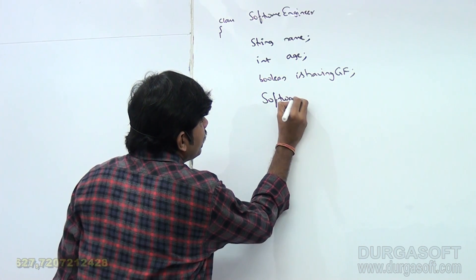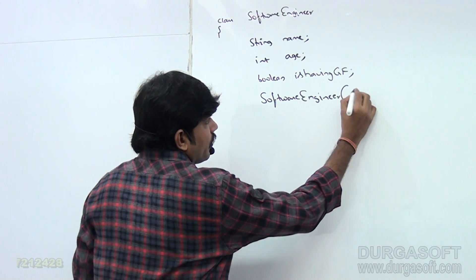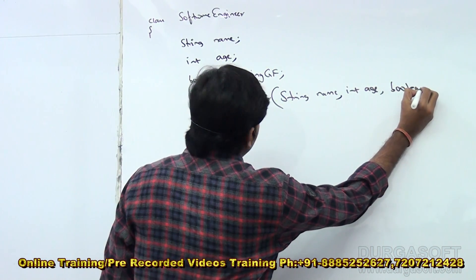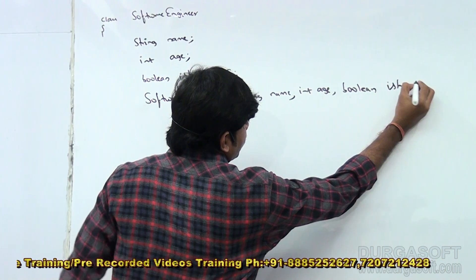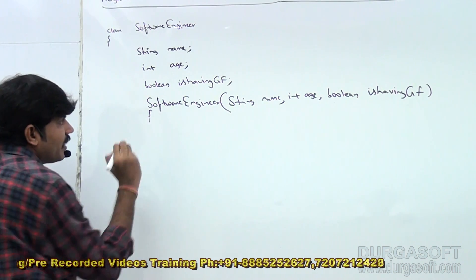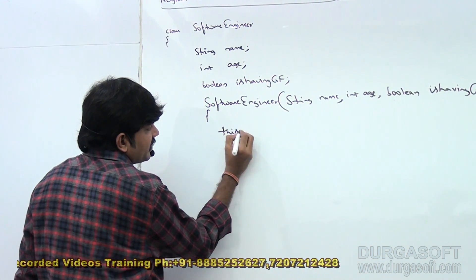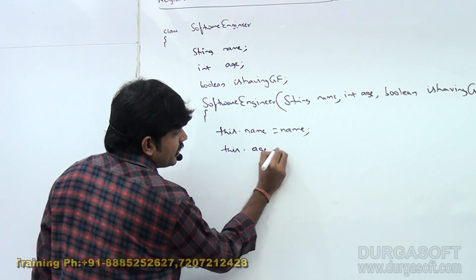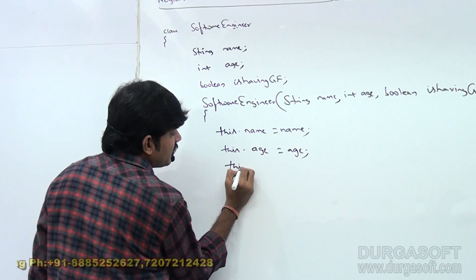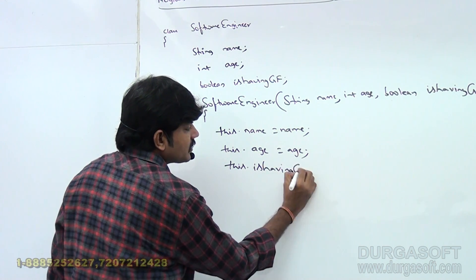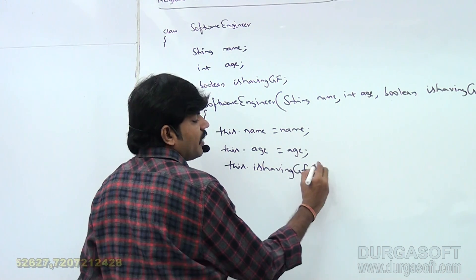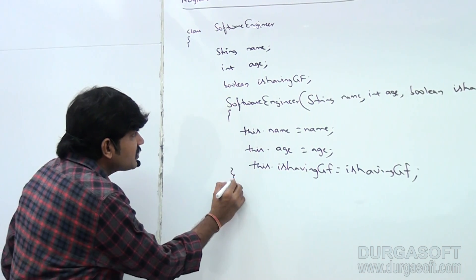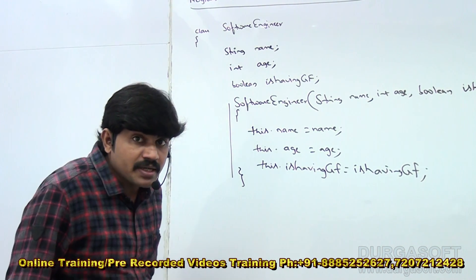Let me create the constructor: SoftwareEngineer(String name, int age, boolean isHavingGirlfriend). Inside: this.name = name; this.age = age; this.isHavingGirlfriend = isHavingGirlfriend. With this constructor you can create any number of software engineer objects.